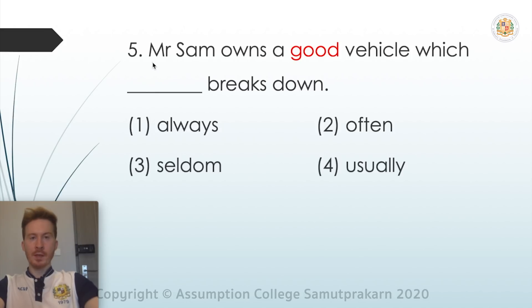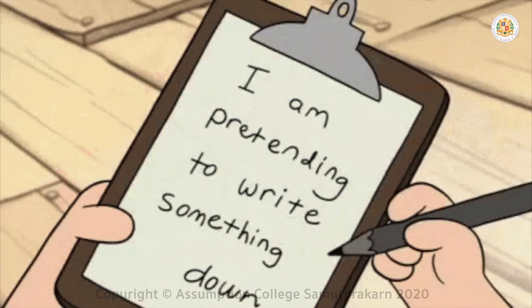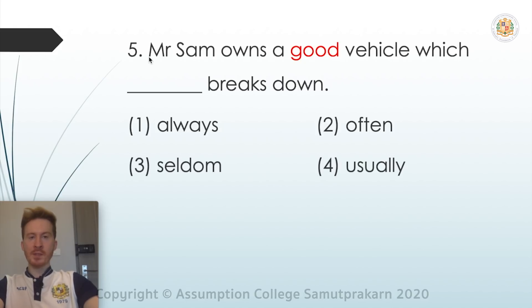Question five: 'Mr. Sam owns a good vehicle, which ___ breaks down.' We need an adverb. If the vehicle is a good vehicle, do you think it always breaks down? Often breaks down? Seldom breaks down? Or usually breaks down? A good vehicle would not usually, often, or always break down — it would seldom break down. So the answer is number three: seldom.